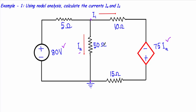Let me start our analysis using nodal analysis. In the first step we have to take a reference node and designate its voltage equal to zero. This is our ground — our reference node — and it will have a voltage V0 equal to zero volts. We have only a single node here; let's call it node number one, with node voltage V1.